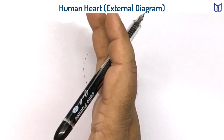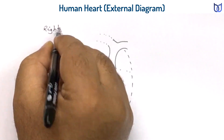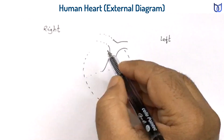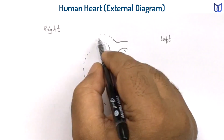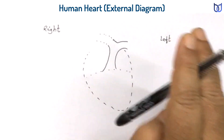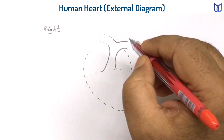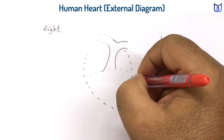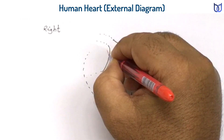In this diagram, we are assuming the right side and the left side accordingly. The pulmonary aorta divides into two branches: one called the right pulmonary artery and another called the left pulmonary artery. Another blood vessel crosses the pulmonary artery, arising from the left side — this is the systemic aorta.